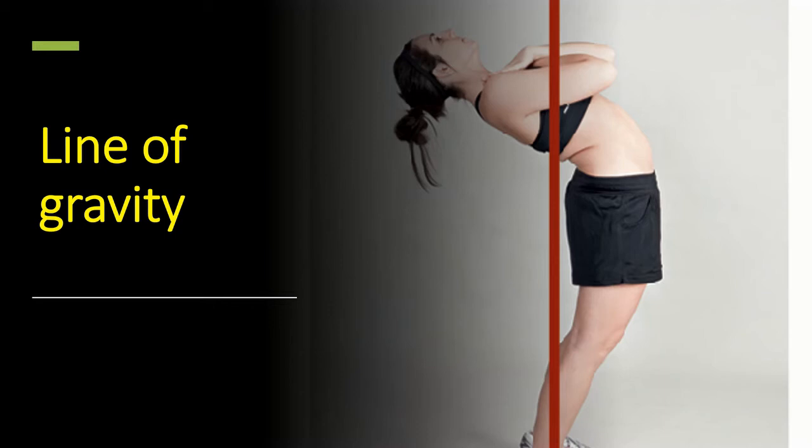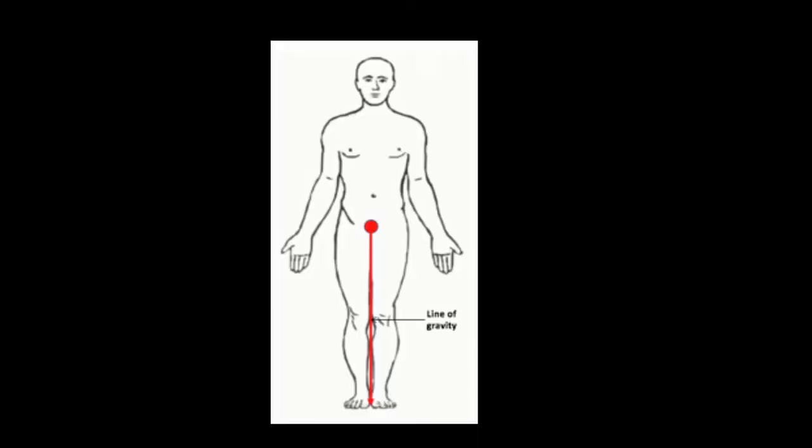In order for somebody to be stable, that line has to fall within your base of support. So the bigger your base, the more likely it is to fall within that line. Here's the line of gravity falling between your feet.